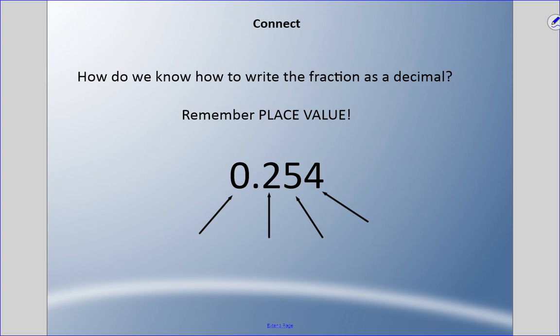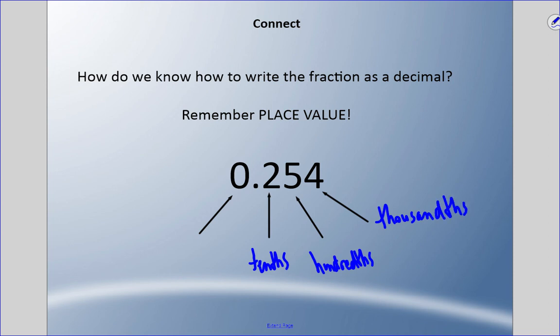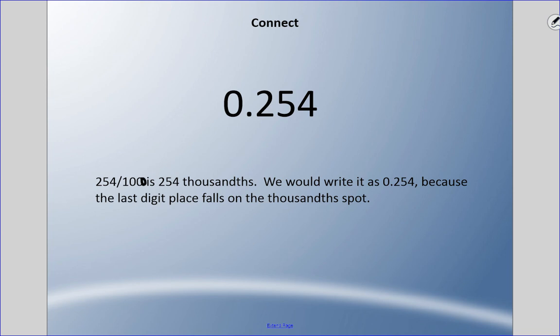Now let's review how to write a fraction as a decimal using place value. Remember: the first digit after the decimal is tenths, the next is hundredths, and the next is thousandths. So for 254 over 1000, the last digit must land on the thousandths place — we write 0.254 and say '254 thousandths.'